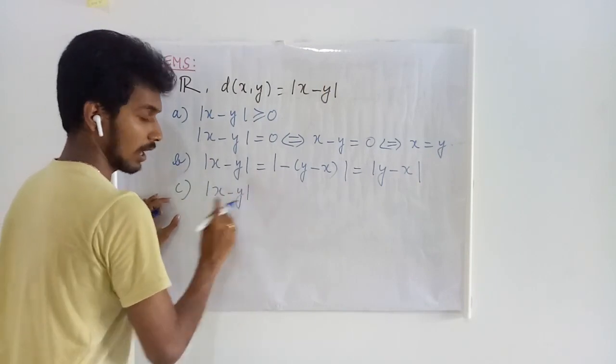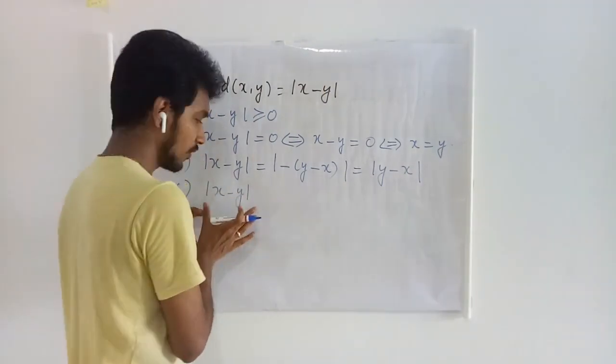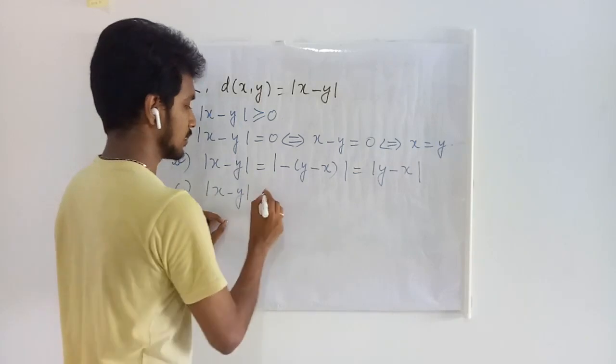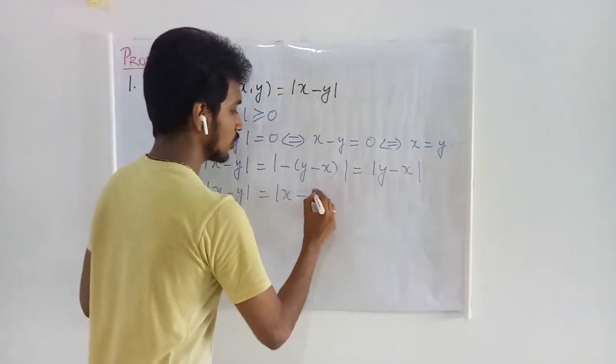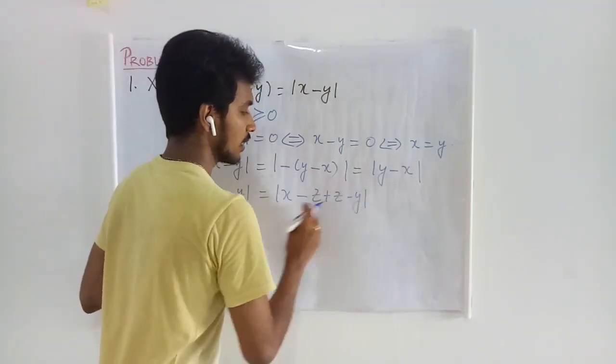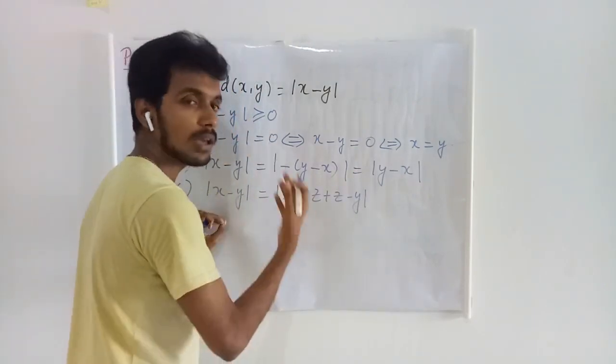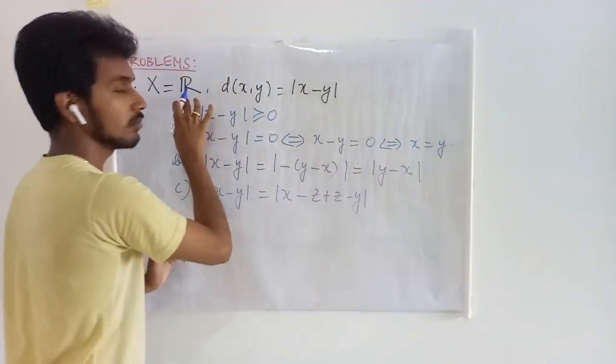The third condition is, let us consider this. And without changing the value of this thing, let me add and subtract any arbitrary quantity that was taken from r. What happens?